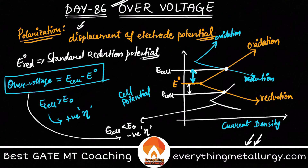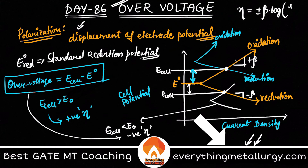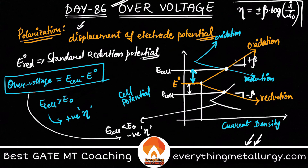You can take the slopes of the polarization curves. The slopes are taken as plus or minus beta (Tafel slopes), and overvoltage eta can be expressed as: eta = ±β × log(I / I₀), where I₀ is the exchange current density and I is the current density at a given potential.